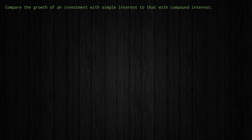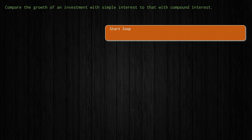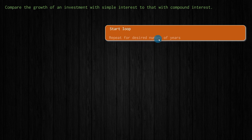Let's look at our pseudocode. I'm going to start with not the first step in the code but some of the final steps, just so we can get to the heart of what we're calculating. We're going to use a loop because we want to show the total with simple interest compared to compound interest for several years, repeating for some desired number of years.